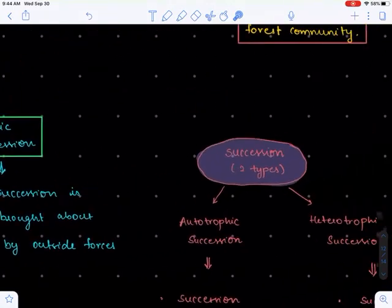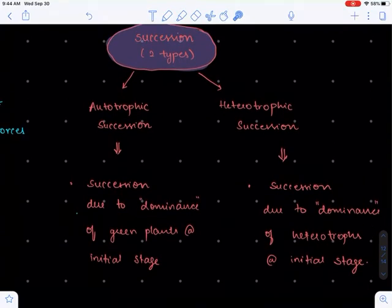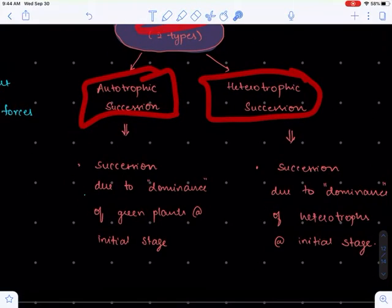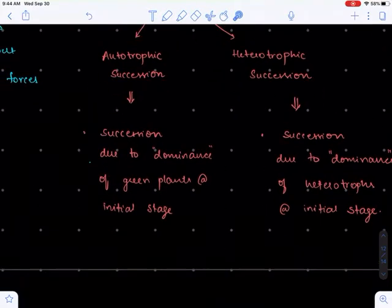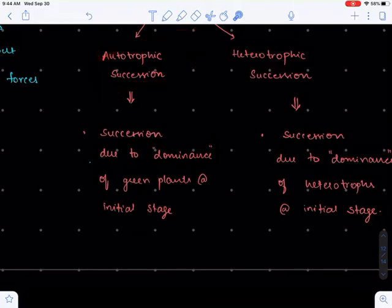The other classification includes autotropic succession and heterotrophic succession. Autotropic succession is driven by the dominance of plants at the initial stage. Here, succession happens from a stage where there are more plants. It doesn't mean there are no animals, just that there are more plants compared to animals.